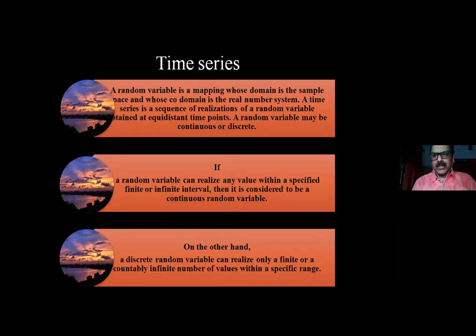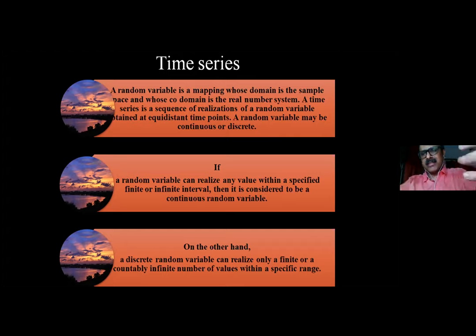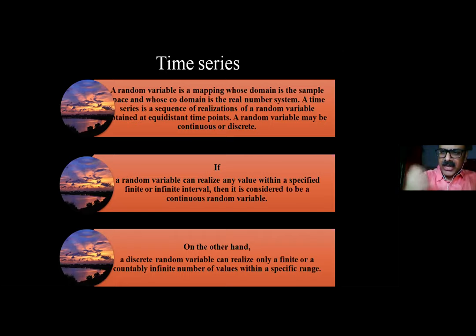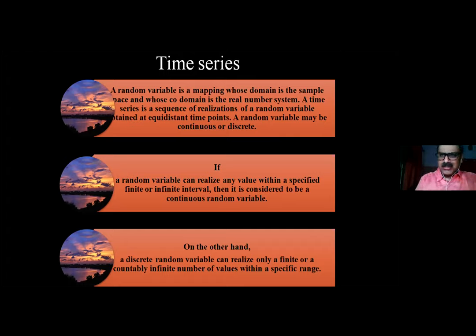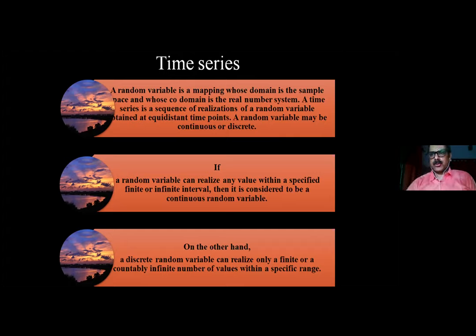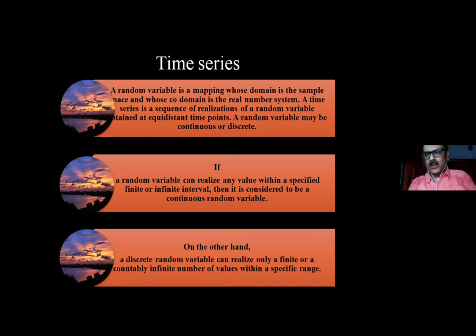In the time domain approach, we do not take into account any cyclic pattern — we consider the data in the domain in which it is obtained. In the time domain approach there are two types: the discrete approach, which is a Markovian approach, and the continuous approach, which is an autoregressive approach. The second option is the frequency domain, where we work not in the time domain but in the frequency domain — and that is what we are reporting here.